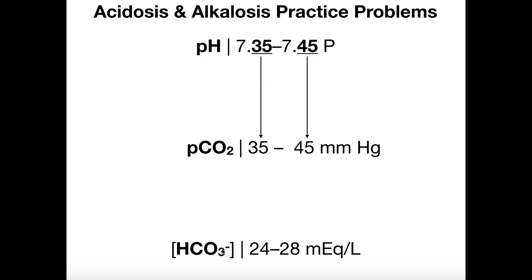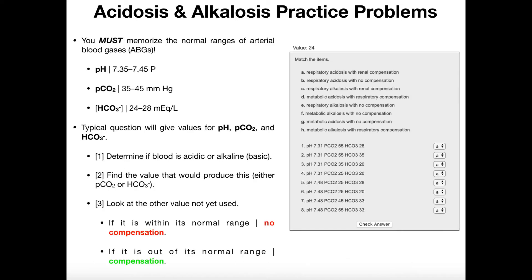As far as I know, there is no trick to learning the bicarbonate HCO3 minus range of 24 to 28. But if there is, please leave a comment — that'd be helpful for me and for anyone else watching. So memorize these three ranges, and once you've got those, we can go into answering these questions. We're going to use a strategy of three steps every single time, in the same order every time.